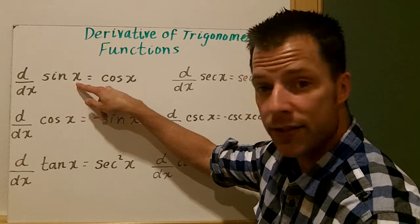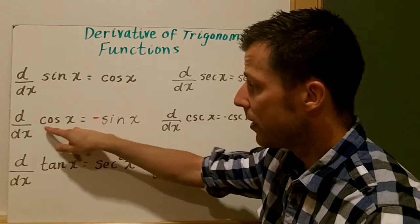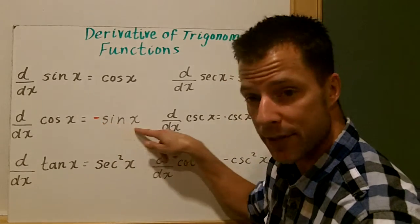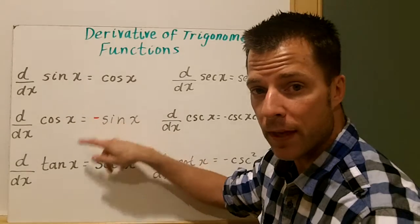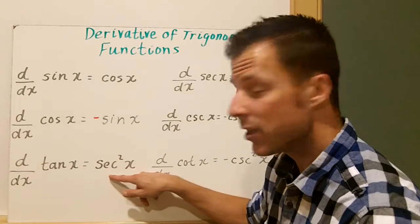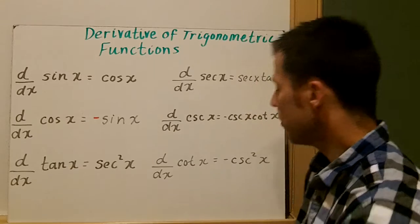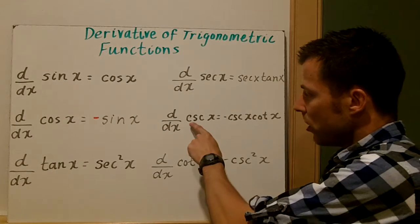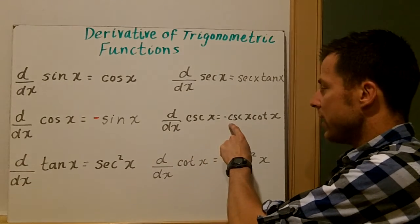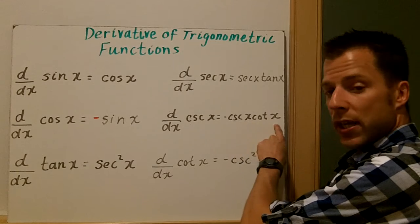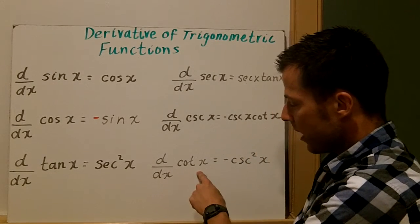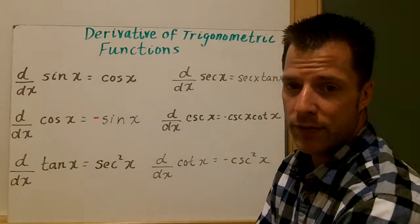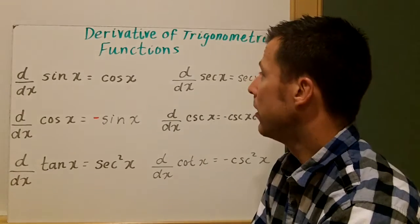The derivative of sine x is cosine x. The derivative of cosine — and you have to be careful here — the derivative of cosine of x is negative sine x, the opposite of sine x. I put that in red to be careful. The derivative of tangent x is secant squared x. The derivative of secant x is secant x times tangent of x. The derivative of cosecant x is negative cosecant x cotangent x, and finally, the derivative of cotangent x is negative cosecant squared x. These are the six derivatives we're going to use throughout this concept.